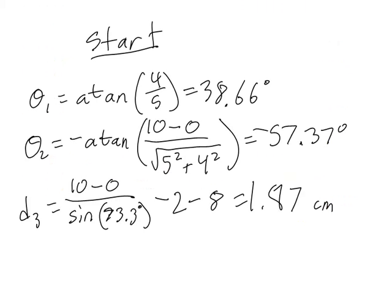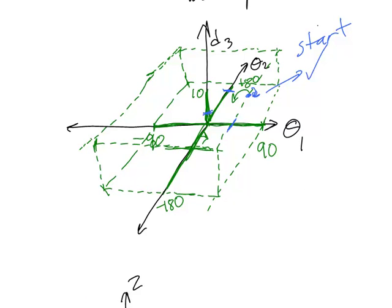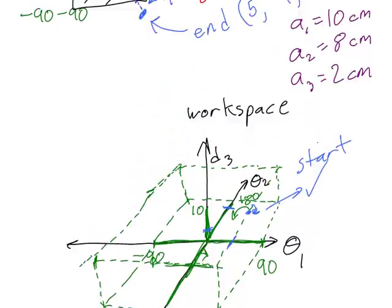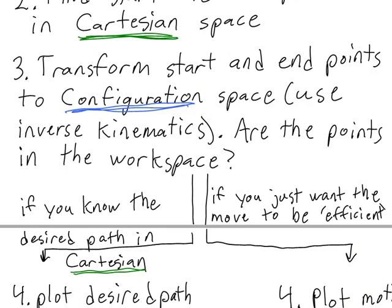I'll plot this point also in my configuration space to make sure that the end point is also inside the workspace. The end point will end up being somewhere where both theta1 and theta2 are negative, and this point is also inside the rectangle. So far, we're good to go — both our start and end points are inside the workspace. That's what we were trying to figure out by doing this whole step 3, where we transform the start and end points to configuration space and make sure they fall inside our workspace.